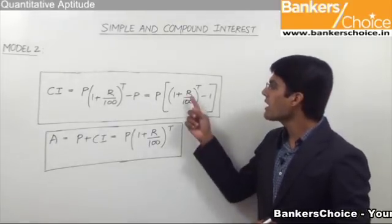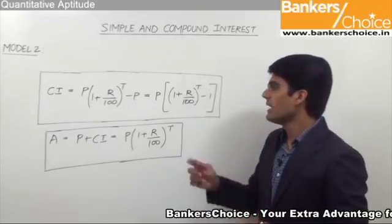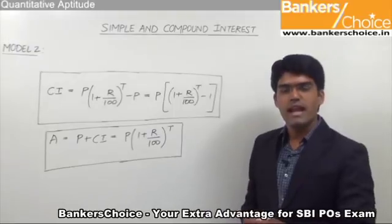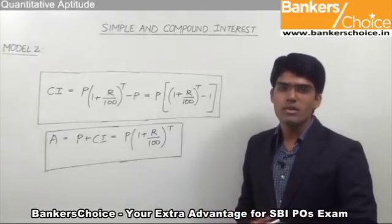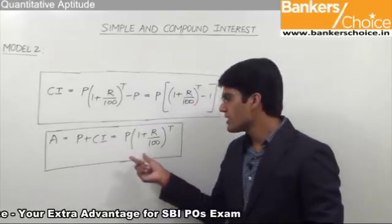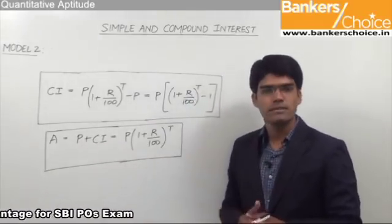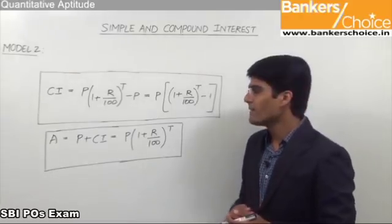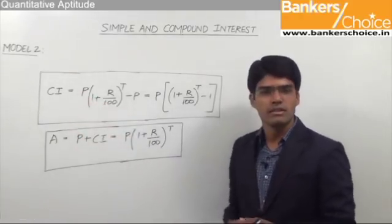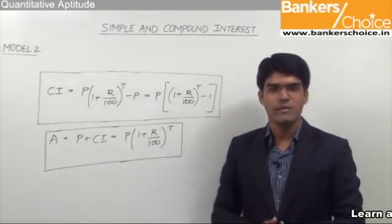Remember, the rate of interest R should always be in percentage per annum and the time period T should always be in terms of number of years. The total amount in case of compound interest can be taken as principal plus CI, which equals P into (1 + R/100)^T. Depending on the question, we first need to decide whether it is the compound interest or the amount that has to be calculated, then substitute the values at the proper places.